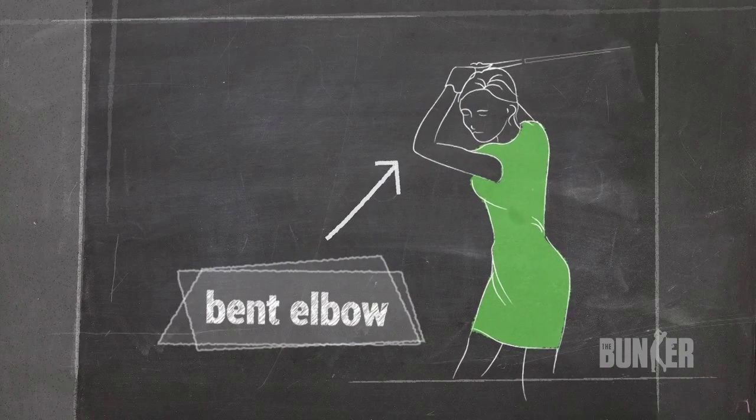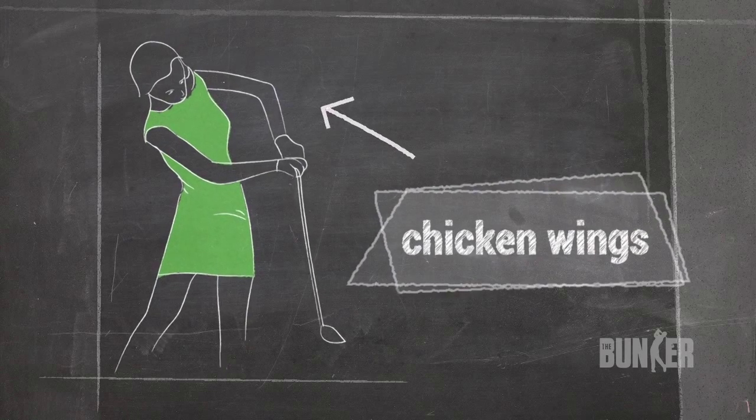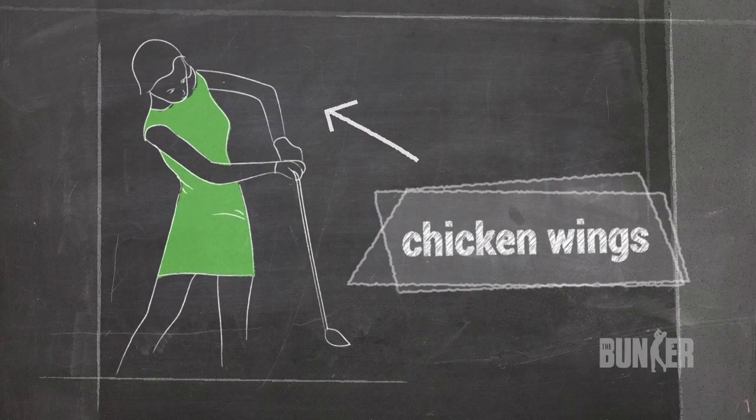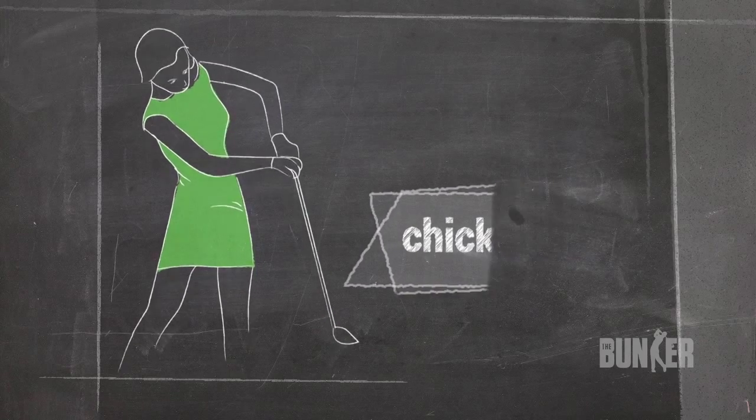A bent elbow automatically forces an open face. And even worse, the common chicken wing—that's two elbows bent—produces no core strength, clumsy movement and generates a misplaced shot.